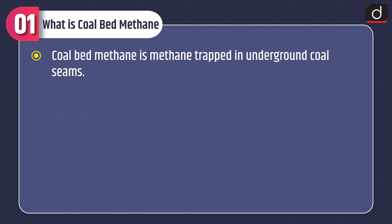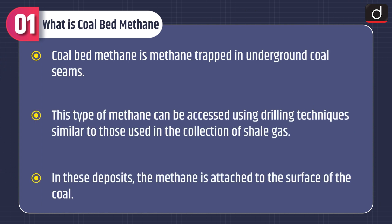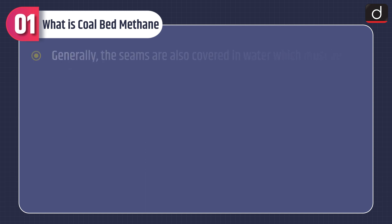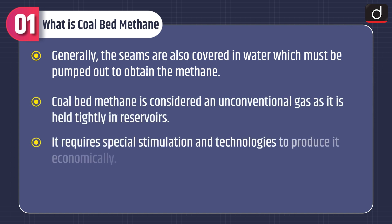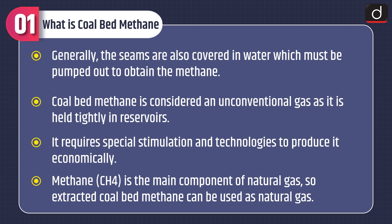First of all, let's discuss what is coal bed methane. Coal bed methane is methane trapped in underground coal seams. This type of methane can be accessed using drilling techniques similar to those used in the collection of shale gas. In these deposits the methane is attached to the surface of the coal. Generally the seams are also covered in water which must be pumped out to obtain the methane. Coal bed methane is considered an unconventional gas as it is held tightly in reservoirs. It requires special stimulation and technologies to produce it economically. Methane or CH4 is the main component of natural gas, so extracted coal bed methane can be used as natural gas.